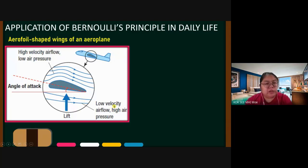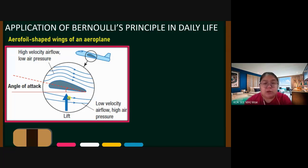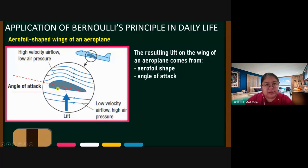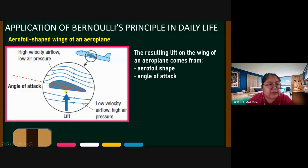The lower part has low velocity, meaning high pressure. Now there are two different pressures — top is low, bottom is high — and this produces a lifting force, just like the paper demo. The lift on the aeroplane wings comes from the shape (aerofoil) and the angle of attack, because the plane must tilt slightly upward when lifting. This is how the plane generates lift.